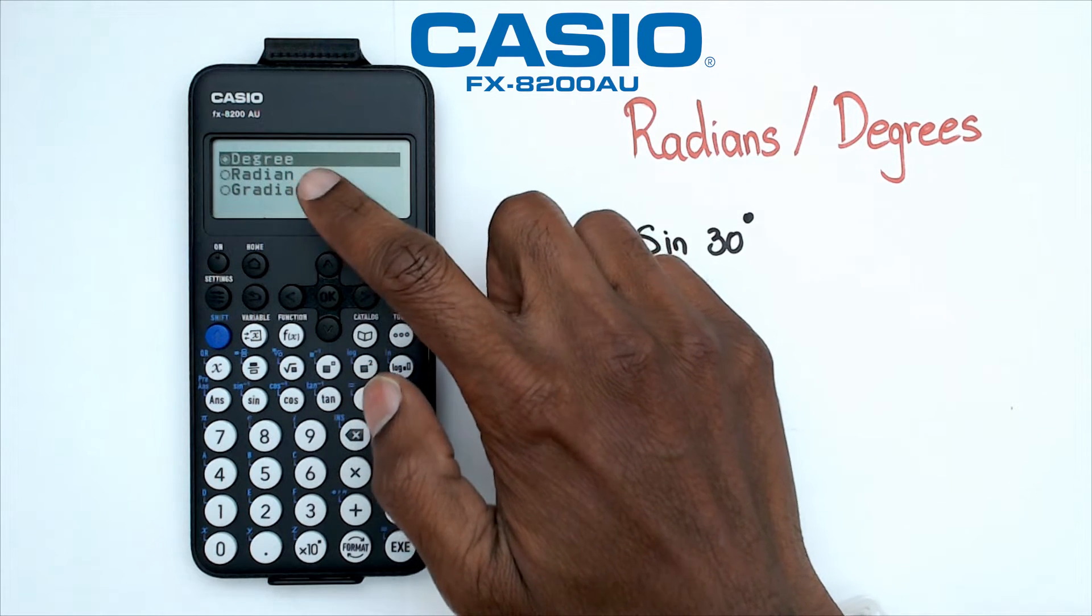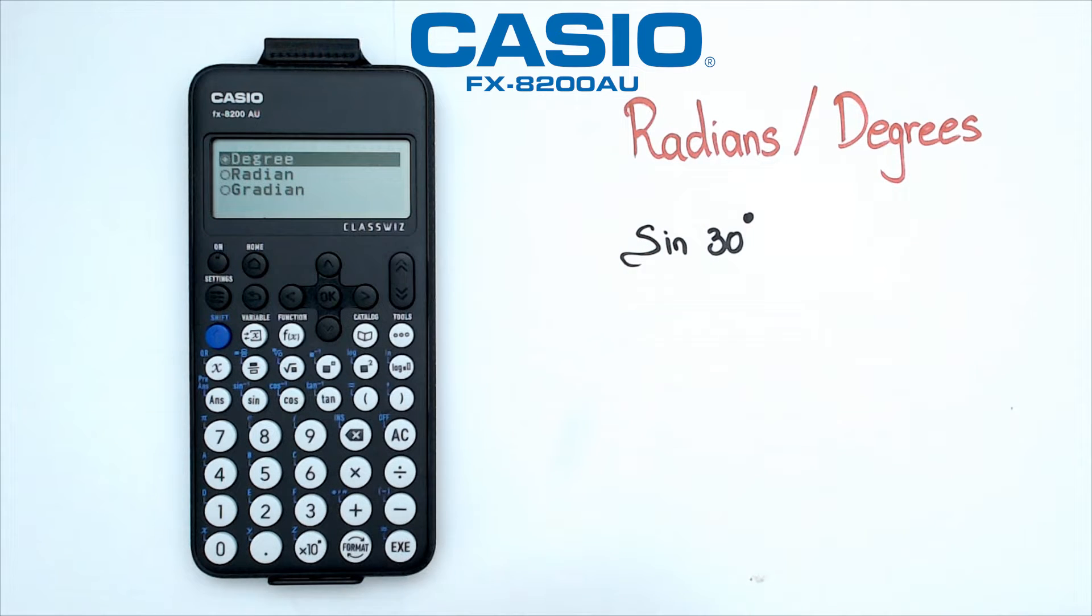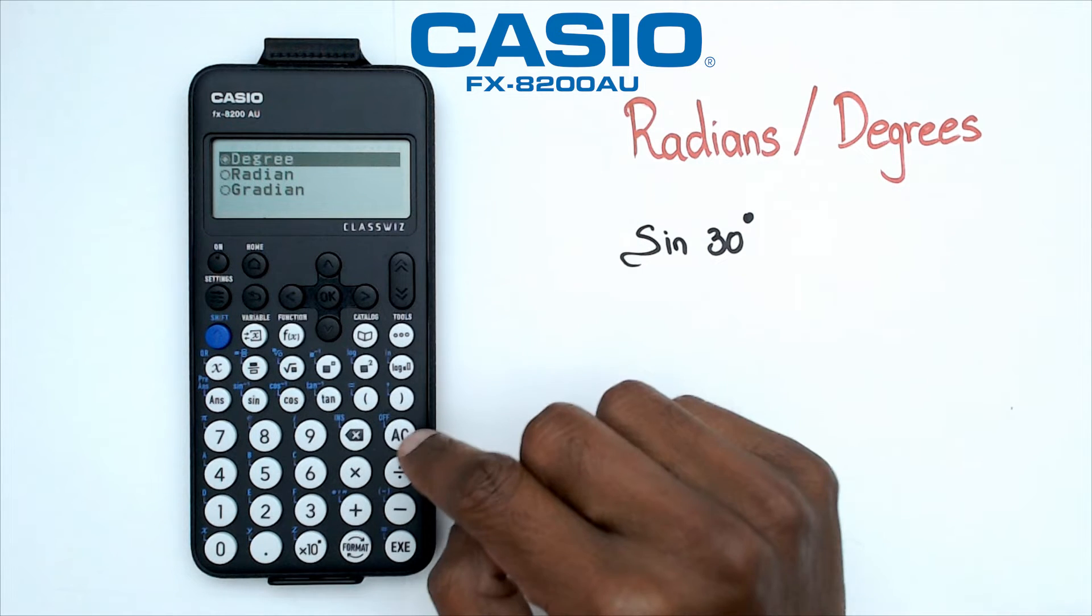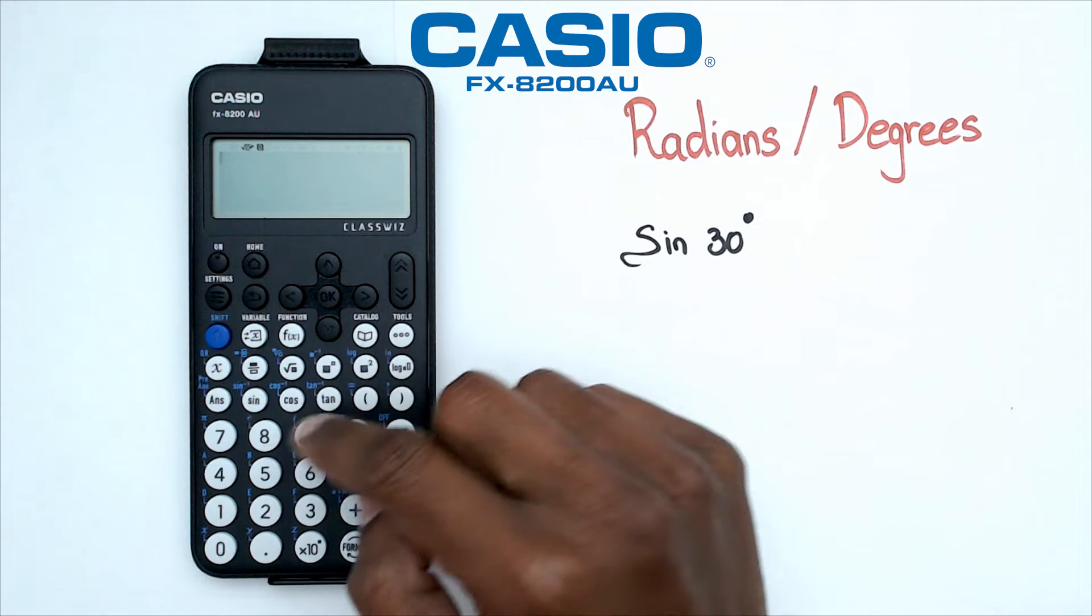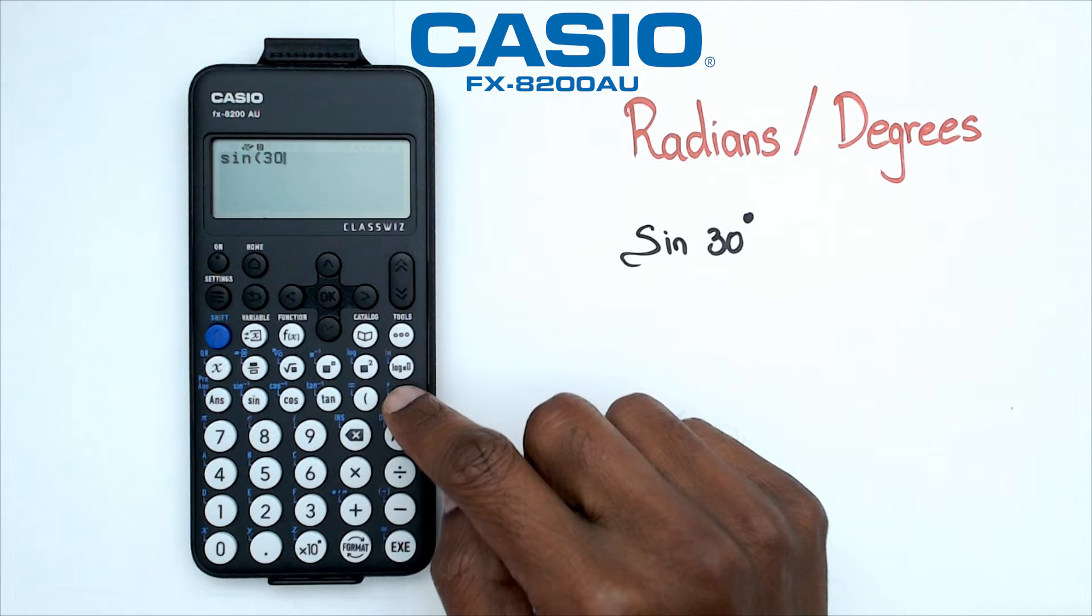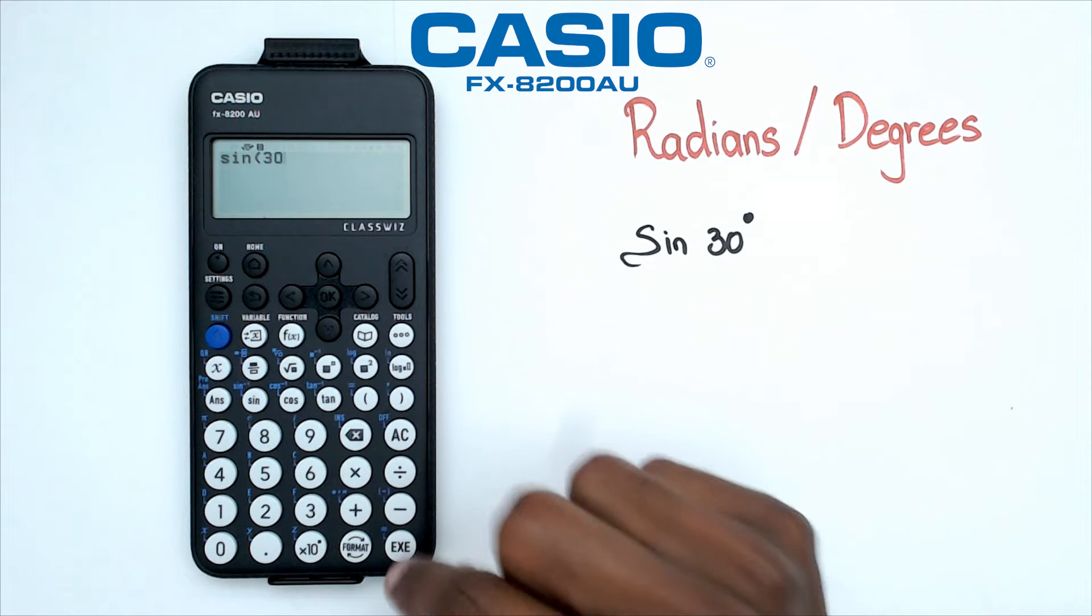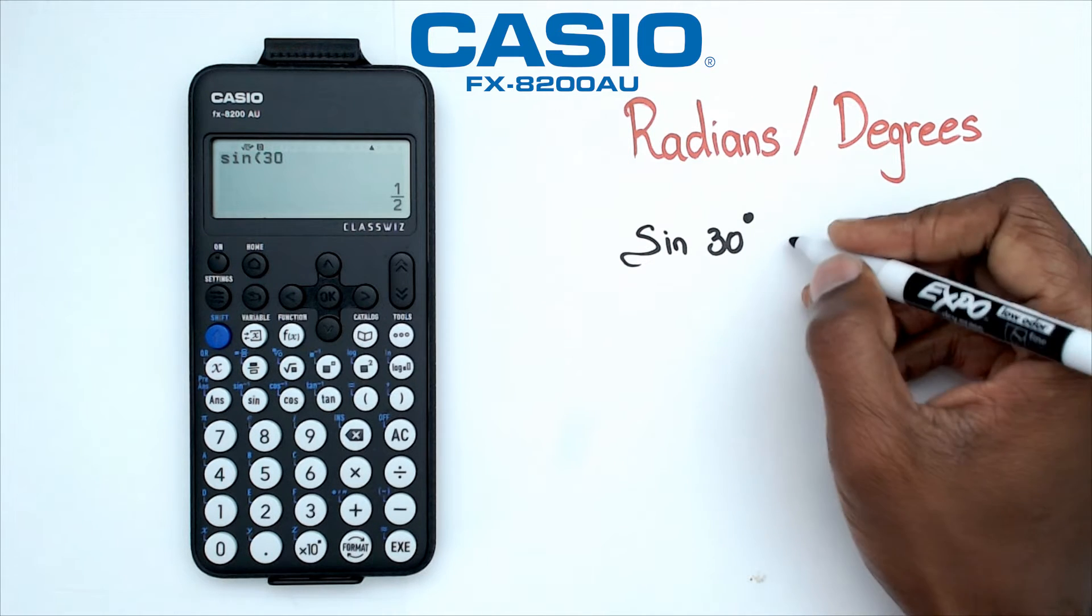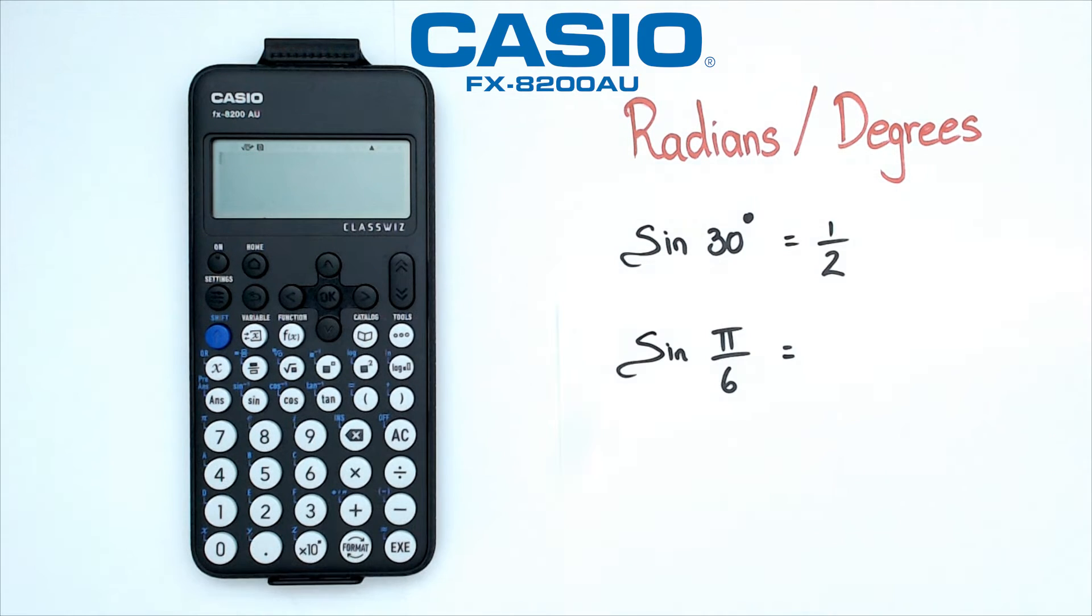Let's actually work out what sine 30 is first. So when I do sine 30, I've got sine of 30. Now I don't need to actually close the bracket, I could actually leave it like that, and what I'm gonna get is a half.